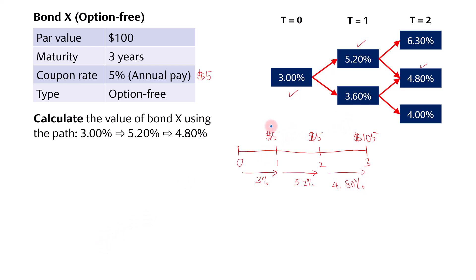Starting with the first cash flow of $5 at year 1, we discount it from year 1 back to year 0 using the 1-year spot rate. That gives us $5 divided by 1.03, which is the present value of that first year's coupon.